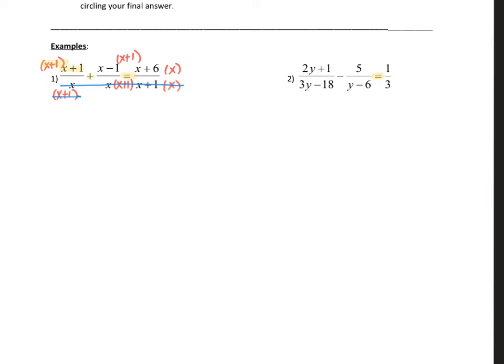So this times this plus this times this equals this times this. So if we want to write it out, it would be (x+1) times (x+1), then plus (x-1) times (x+1) equals x times (x+6). I like to put the single guy first. It's just easier for me to simplify.